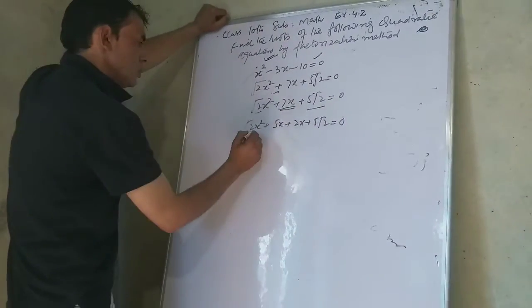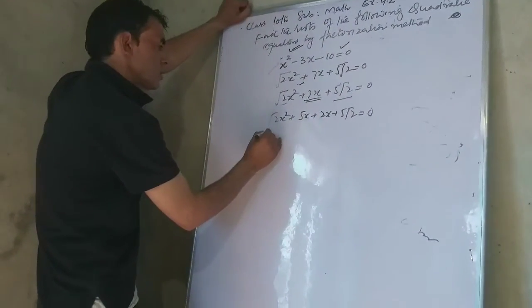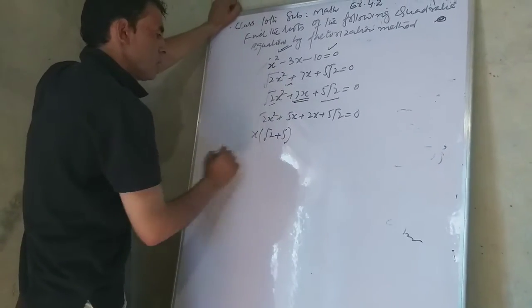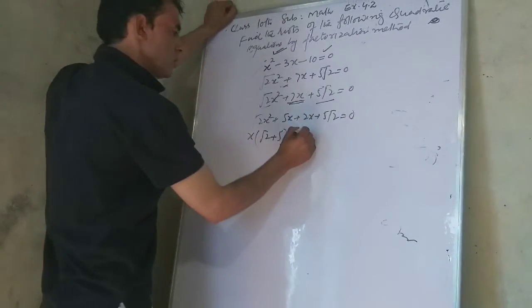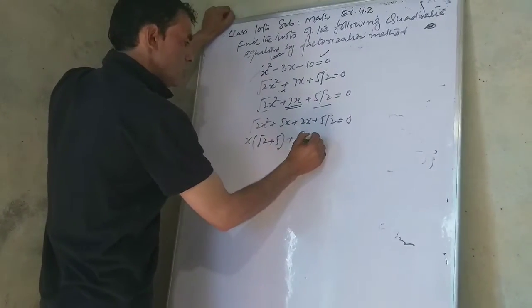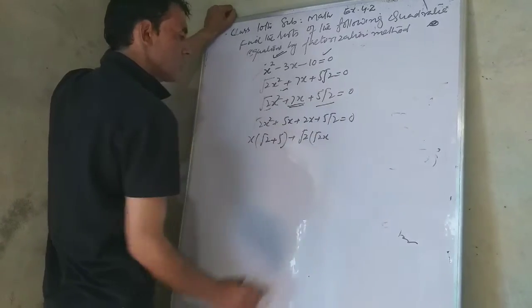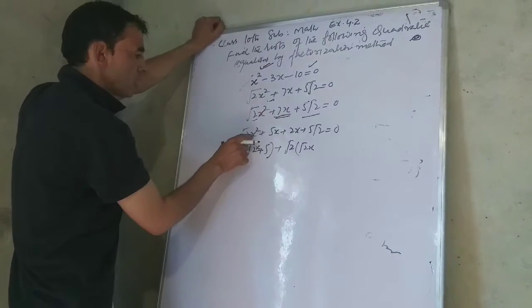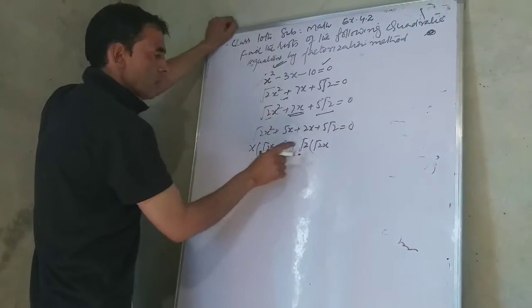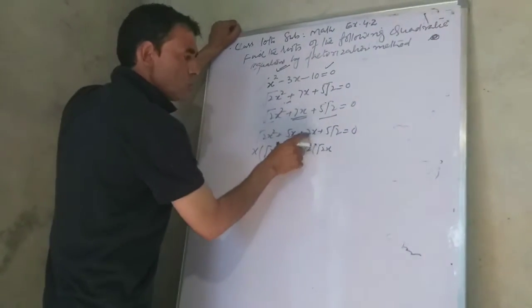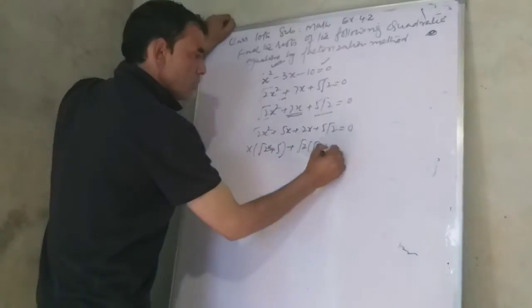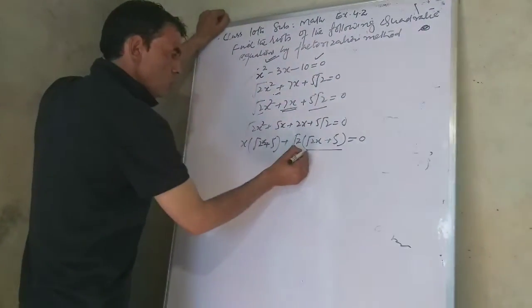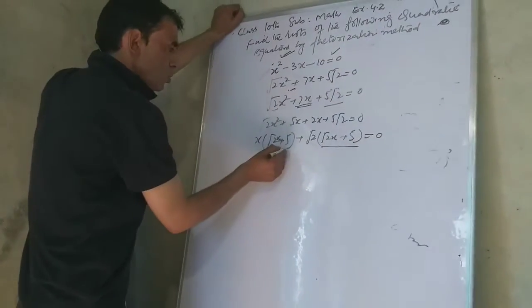For this equation with √2, we can write it as √2x² + 2x + 5x + 5√2 = 0. Taking common factors: √2x(x + √2) + 5(x + √2) = 0.